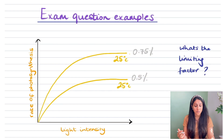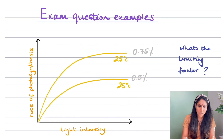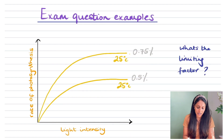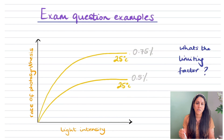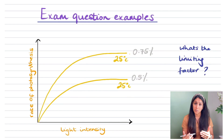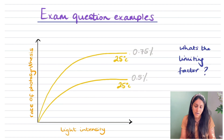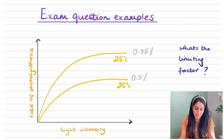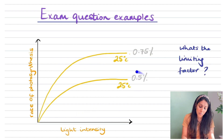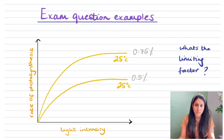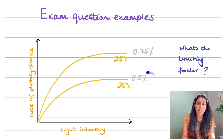Another example: two experiments again shown by two lines. Both are happening at the same temperature of 25°C, but one is at 0.5% concentration of carbon dioxide and the other at 0.75% concentration of carbon dioxide. The limiting factor preventing the first experiment from reaching a higher rate of photosynthesis is the lower carbon dioxide concentration — it has less carbon dioxide available to it.